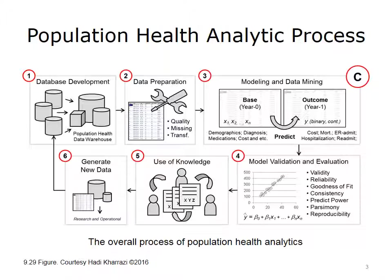As depicted in Box 3, this step usually requires a base data set and an outcome data set that would collectively include the dependent and independent variables. As illustrated in Box 4, the next step contains the model's validation and evaluation process. In this phase, the analysts use various statistical and data mining concepts to measure how good the model is in differentiating the outcome variable, and how reproducible it is when used on other data sets. As pictured in Boxes 5 and 6, a critical step, after an acceptable model is developed, is to apply it within the context of a population health management workflow. As marked by Circle C, this lecture discusses the common methods used to develop population health predictive models. Other phases of the population health analytic process are discussed in other lectures.